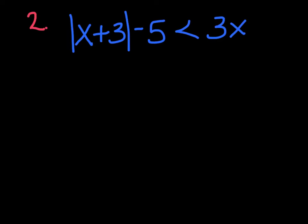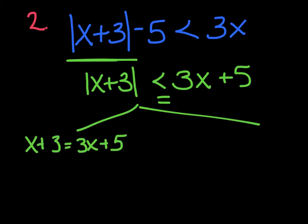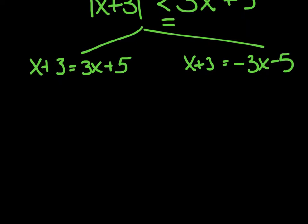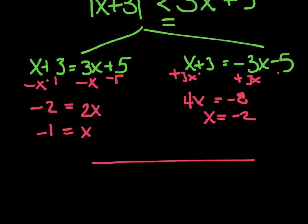Let's try another absolute value inequality. Isolate the absolute value first — add that 5 over, giving |x + 3| < 3x + 5. Treat it like an equal sign and split into two equations: x + 3 = 3x + 5, and x + 3 = −3x − 5. Solving both: from the first I subtract x and simplify to get x = −1. From the second I add 3x to get 4x = −8, so x = −2.